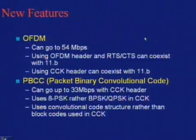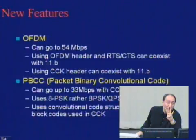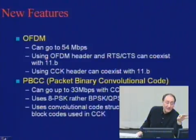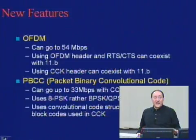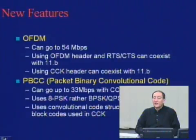By going to OFDM, I expanded the range of data rates for 802.11 from {11, 5.5, 2, 1} Mbps to about seven options from 54 down to 6 Mbps. However, 802.11a is at 5 GHz. The next issue was how to bring this back to 2.4 GHz for better coverage — which led to thinking about 802.11g.